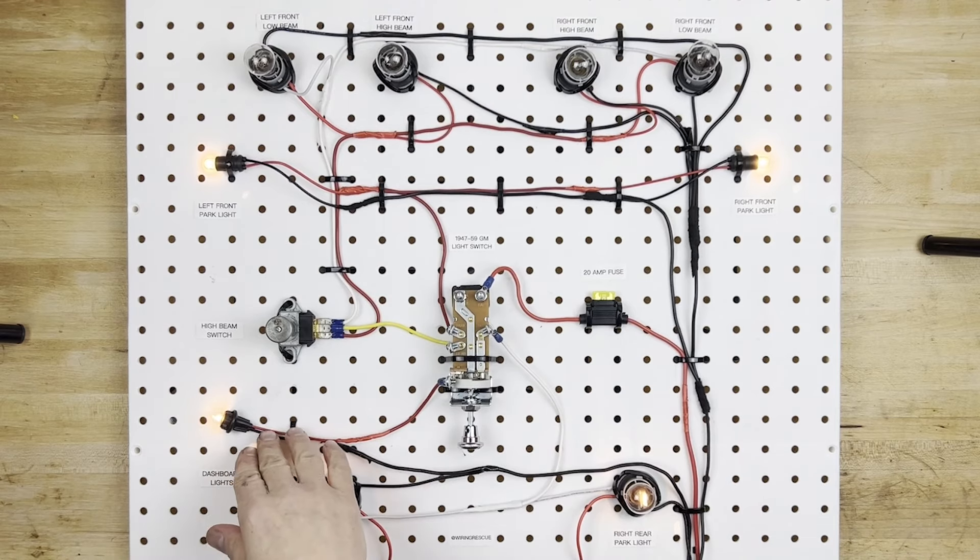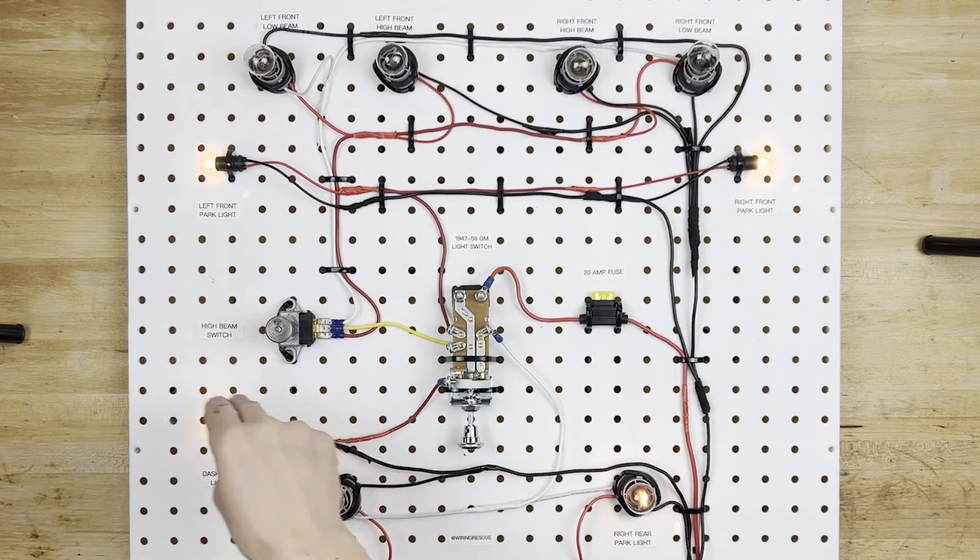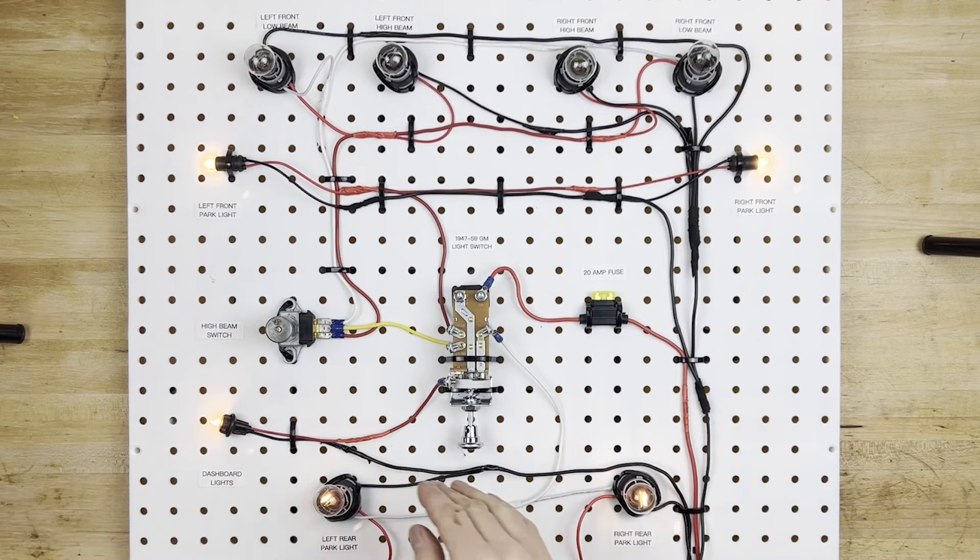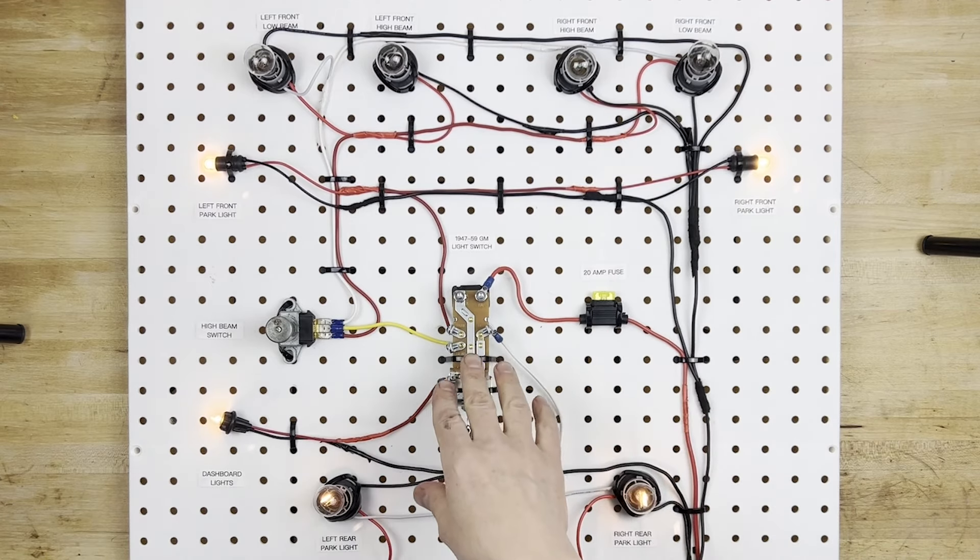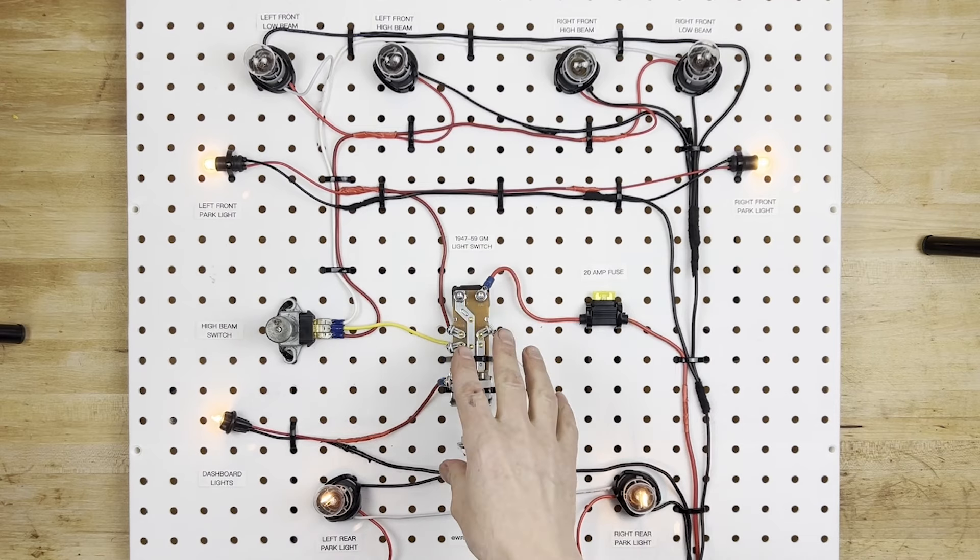If you do have multiple dash lights, you can just tie all of the red wires together, and then ground all of the black wires, and you'll have a whole series of dash lights that turn on and off, depending on how you rotate this. And again, you just have to make sure that the whole switch doesn't exceed 20 amps.